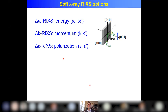I end the talk with some examples of what you can do with RIXS in your own study. I divide RIXS by its degrees of freedom: delta-omega RIXS is energy dependent — you change the energy of photon in and photon out. Delta-k RIXS changes the momentum transfer — you change the angle of photon in and photon out relative to the internal degrees of freedom of the sample, to do a band structure. Or you can change the polarization. Now two examples: one of energy, one of momentum.